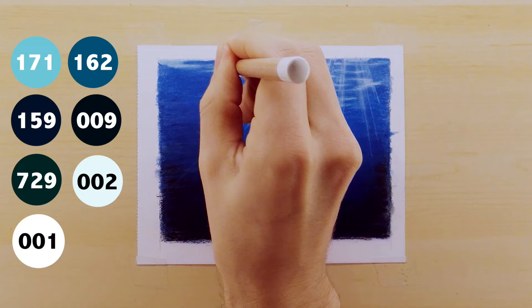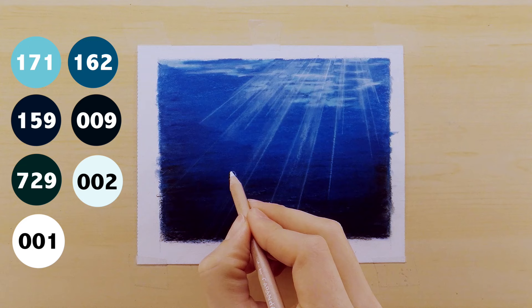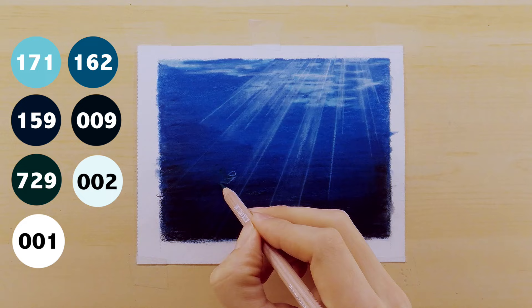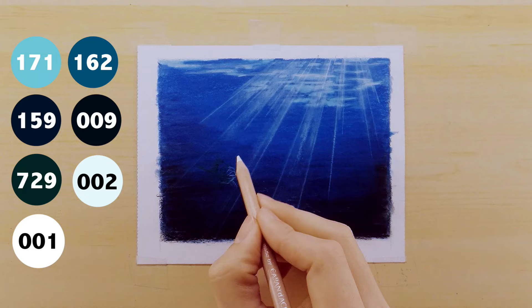The next thing I do is I take my white pencil and I start drawing my little fish. This is at this point is when I use the 729 color, which is a dark green, and the reason I'm using dark green is because if you mix yellow and blue you get green.